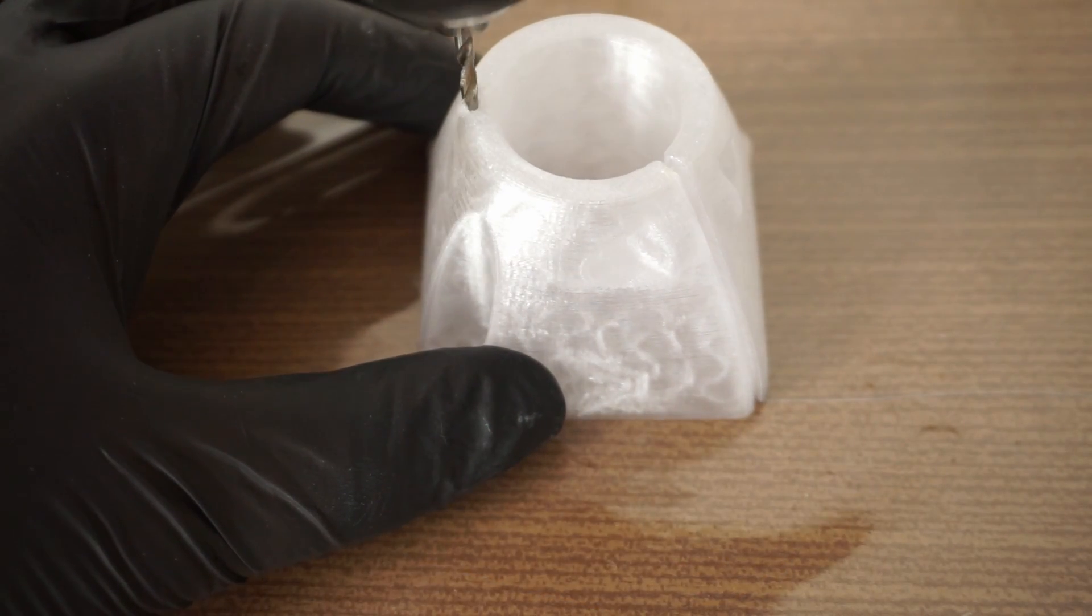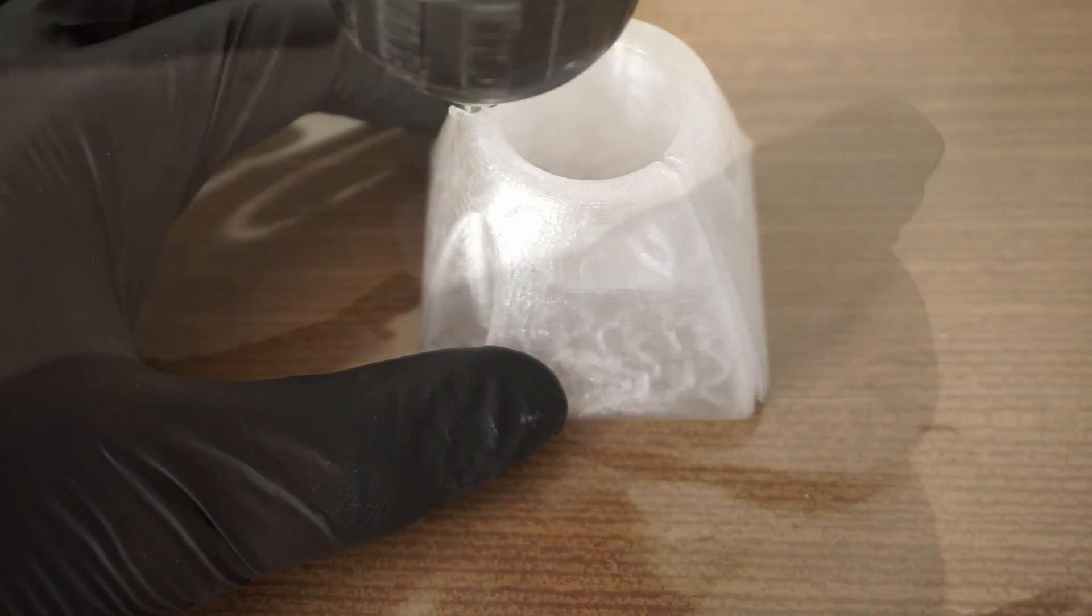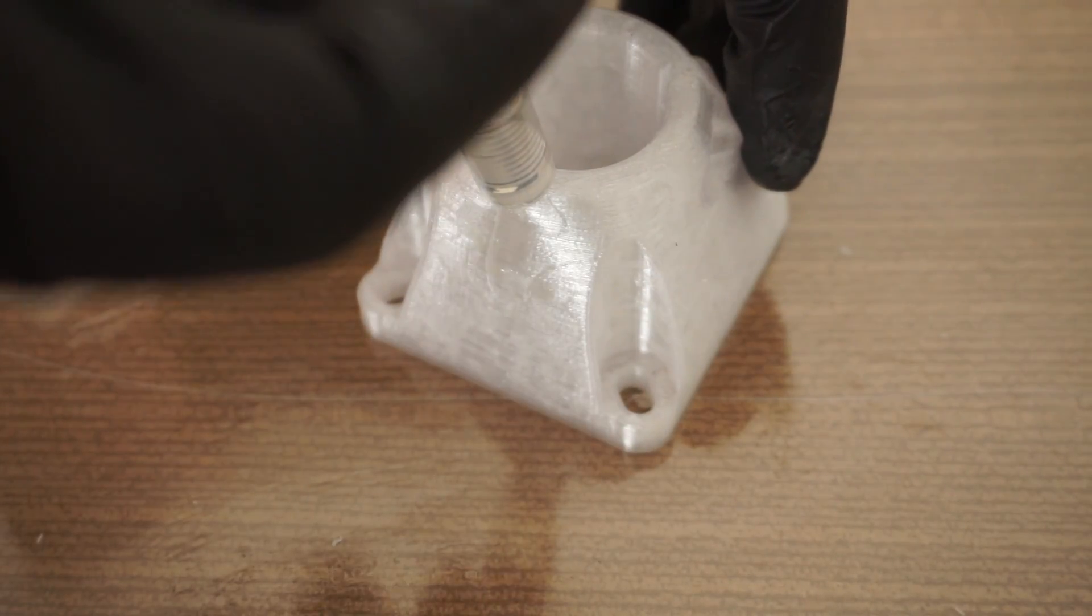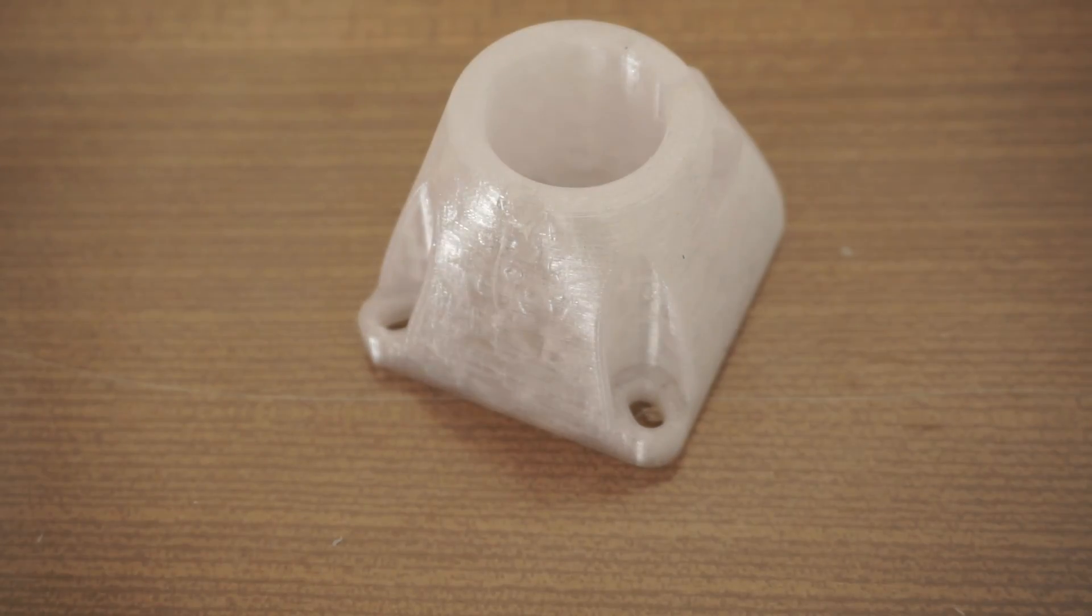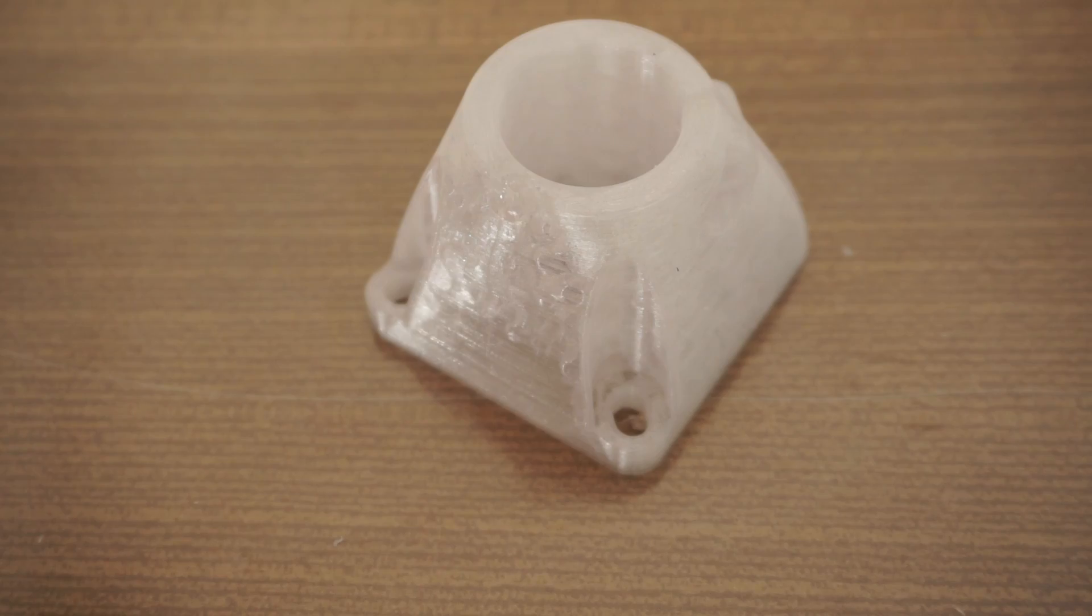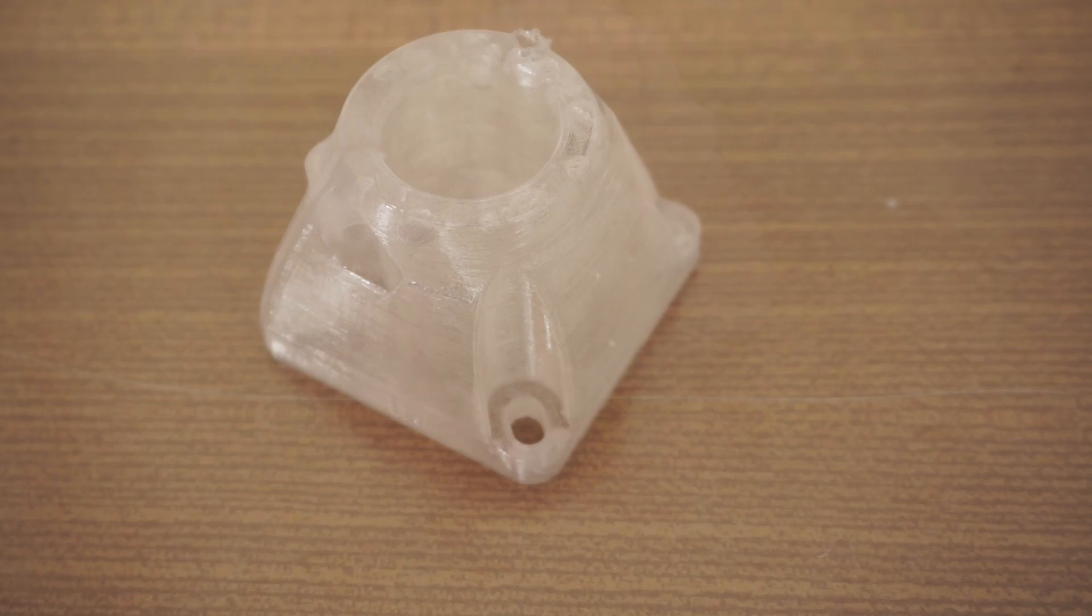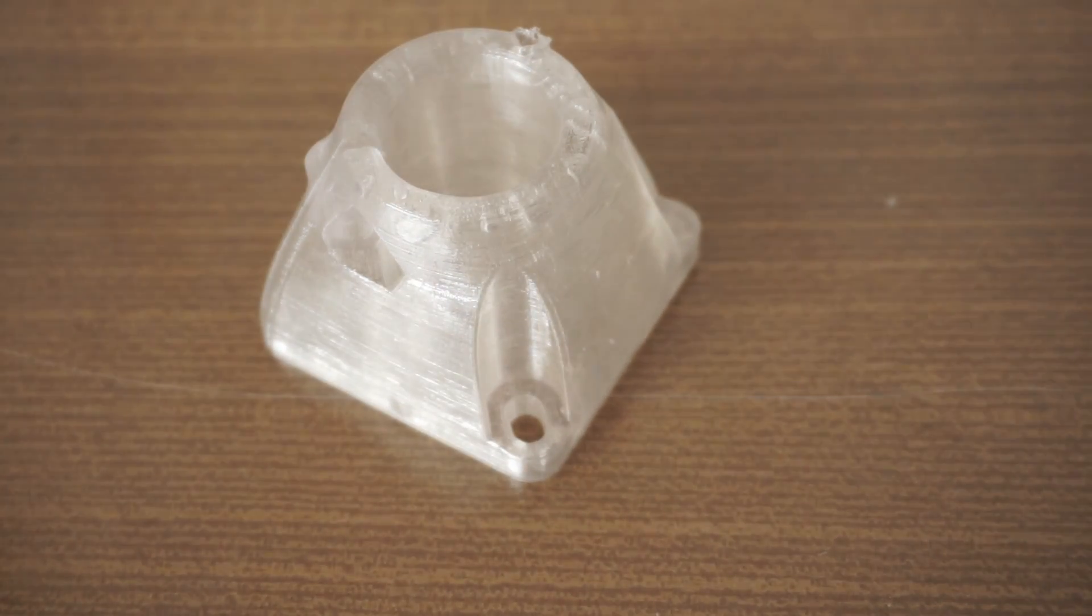So after the print I drilled a hole all the way to the bottom of the part, and then used a syringe to inject the resin. You can see that the epoxy nearly fills the entire part, and it isn't leaking.